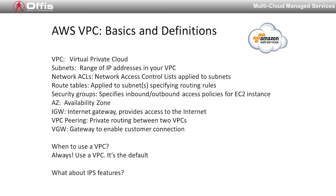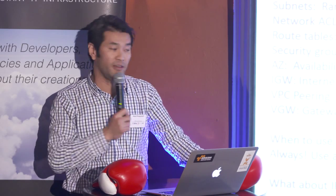VPC peering is basically if you have a different VPC — different accounts, networks, or within the same account — you can create multiple different private networks, link them together so they can communicate through the internal network. And then you've got your virtual gateway. When to use VPC? All the time. You cannot run an Amazon environment properly and efficiently without a VPC.